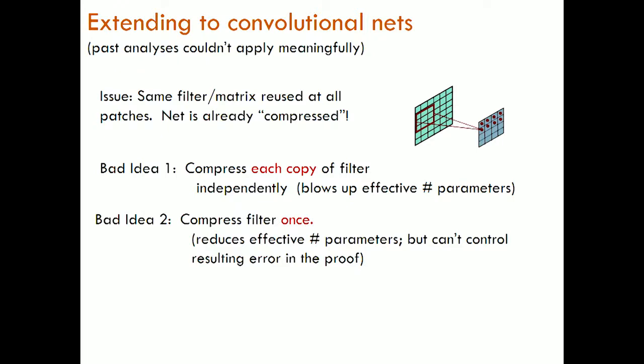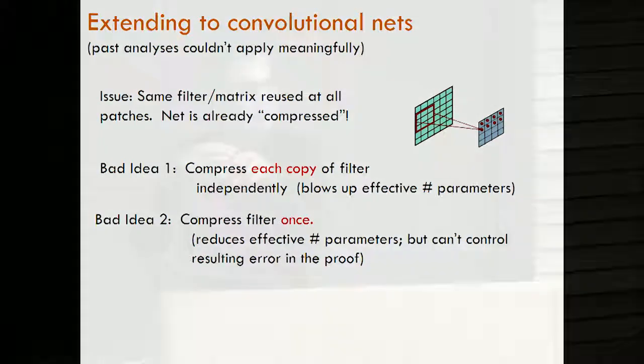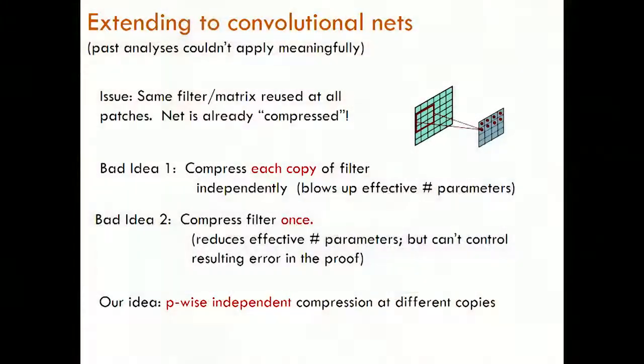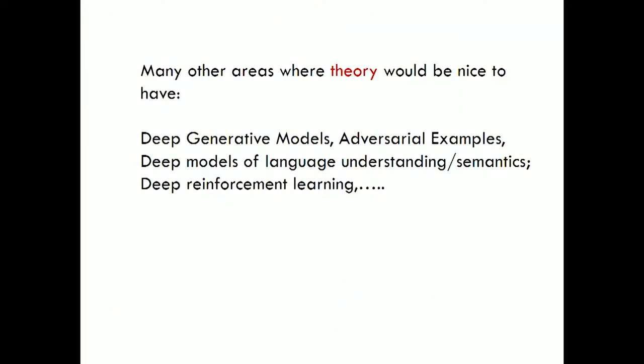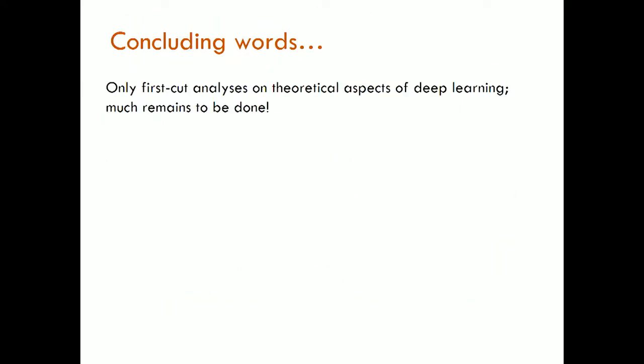Another bad idea in theory — though probably fine in practice — is to compress each filter once and reuse it all over the image. In theory it's bad because the compression introduces errors that are correlated across the image, and in theory you need errors to be uncorrelated. So the idea, well-known in pseudorandomness, is to use pairwise-independent compression — a more complicated use of pseudorandomness similar to hashing. You can do that and extend the analysis.